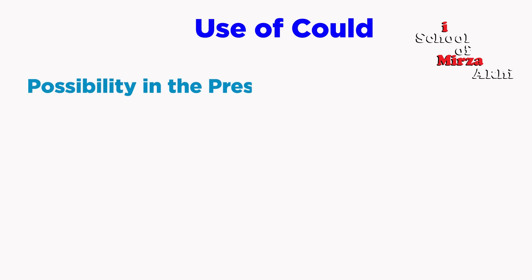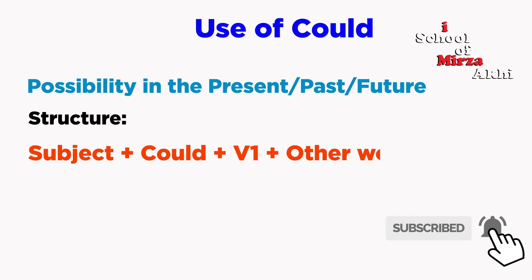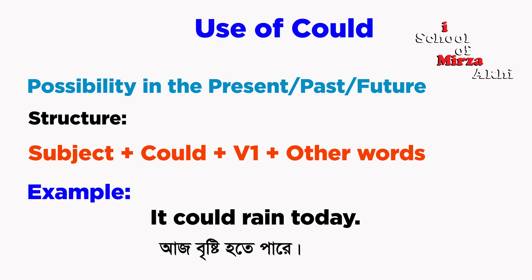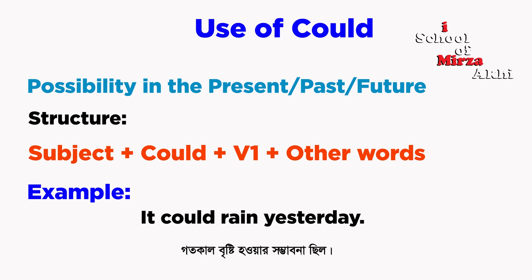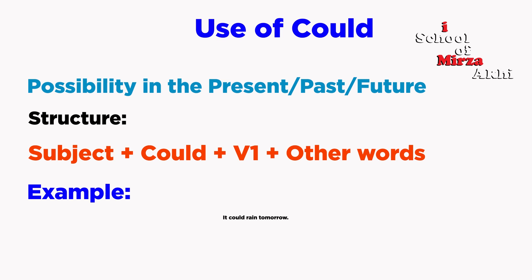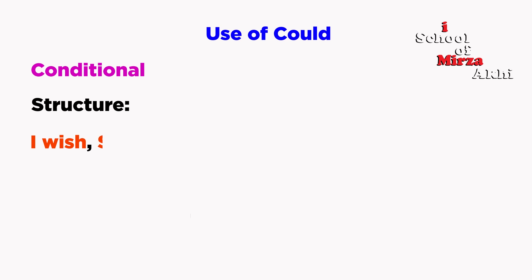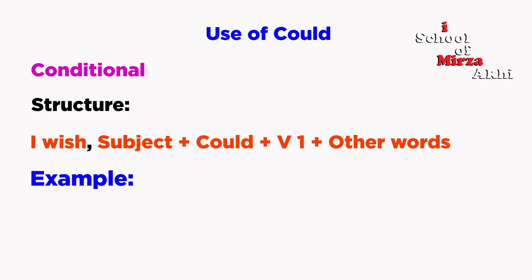Could is used to express possibility in the present, past, and future. Structure: Subject plus could plus V1 plus other words. For example: It could rain today. Another use is with wish: I wish I could go to London.